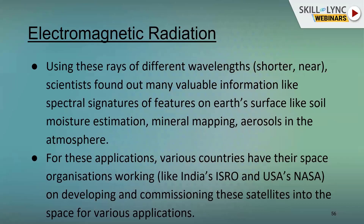Spectral signatures include soil moisture estimation, mineral mapping, and aerosols in the atmosphere — like pollution. How do you find how much pollution there is? With satellite data, of course, along with some ground equipment for smaller areas. But to map pollution across all of India it would be very difficult without satellite information. For example, after Diwali, we measure how much pollution has increased in Delhi using earth-observing satellites — we cannot do it with a ground station alone.